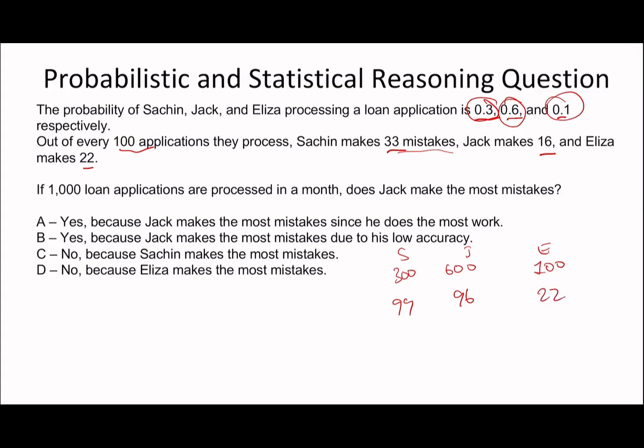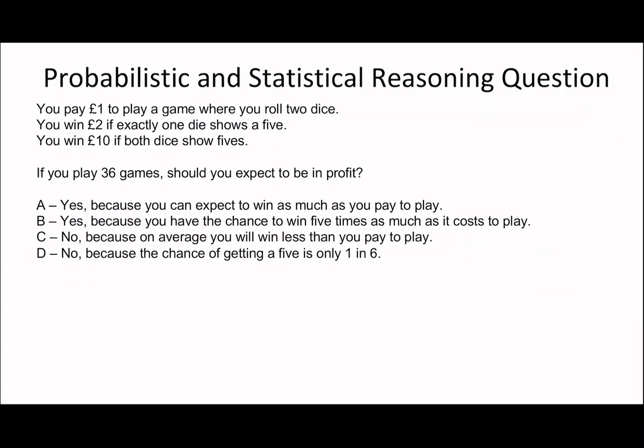Does Jack make the most mistakes? I would say no, because Sachin makes the most mistakes. Not too difficult of a question, you just have to work your way through it. The reason why we get 300, 600, 100 is because this is the probability of them processing an individual loan application, and if we have a thousand of them, you just multiply each of the probabilities by a thousand.